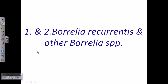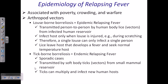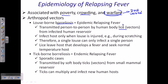Now let's talk about Borrelia recurrentis and other Borrelia species causing epidemic relapsing fever. This relapsing fever is associated with poverty, crowding, and warfare, so it more commonly occurs in third world countries. The vector is louse-borne, and this condition is also called louse-borne borreliosis. It is transmitted from person to person by human body lice.